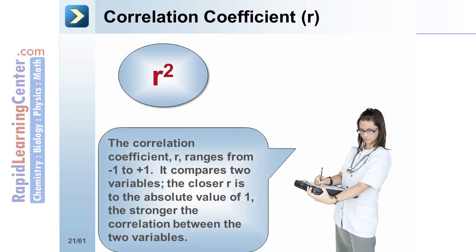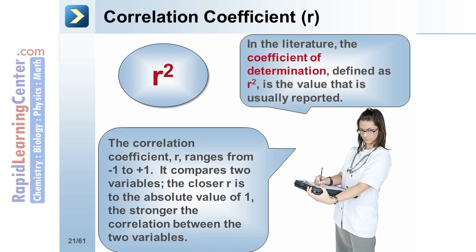The correlation coefficient ranges from minus 1 to plus 1. It compares two variables. The closer r is to the absolute value of 1, the stronger the correlation between the two variables. In the literature, the coefficient of determination, defined as r-squared, is the value that is usually reported.